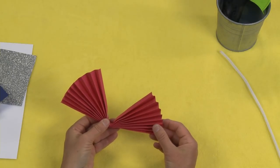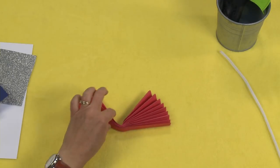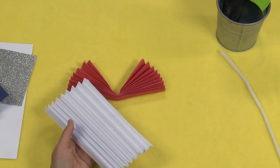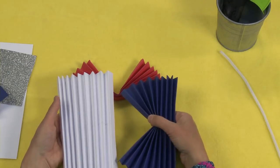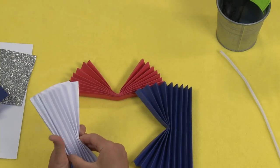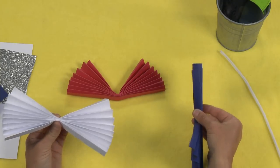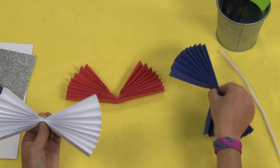So now what we're going to do is we're going to start making our rosette, and you're going to do a white one and a blue one. So you can see I've got these fan folded. There's the white one, the blue one, and the red one, and they're exactly the same.